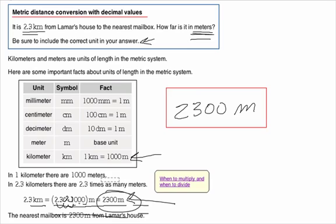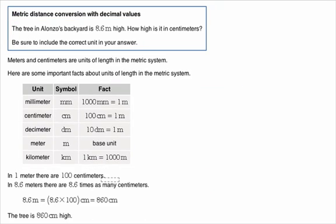Let's look at another example. Here we've got a tree in the backyard. It's 8.6 meters high. How high is that in centimeters? So again, we're going from large to small. So that means we multiply.